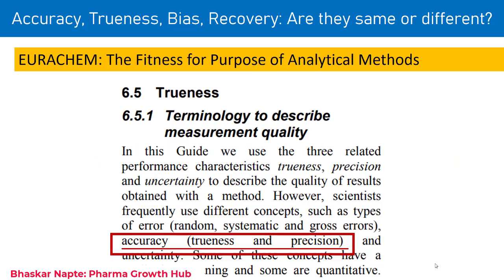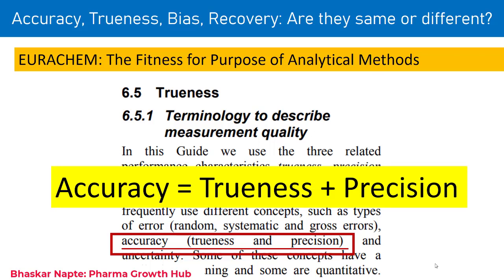The second important guideline we are going to discuss is EURACHEM: 'The Fitness for Purpose of Analytical Methods.' According to this guideline, accuracy is nothing but the combination of trueness and precision — not only trueness, not only precision, but the combination of both. To evaluate accuracy per EURACHEM, trueness must be established plus the precision between the measurements must also be evaluated. Precision can be evaluated in terms of percent RSD, and trueness can be evaluated in terms of bias or recovery.